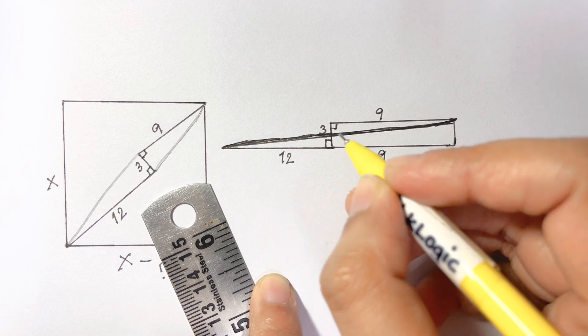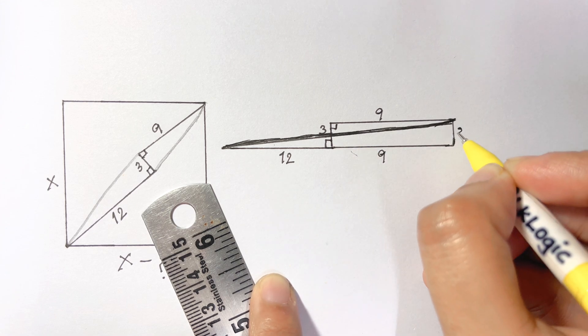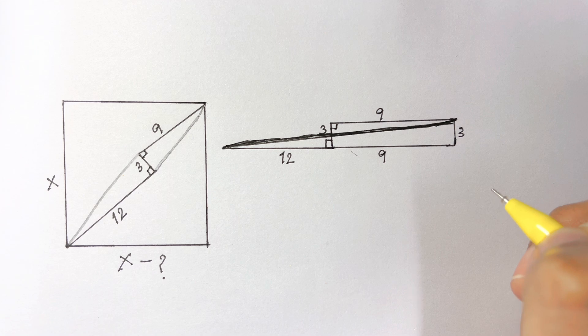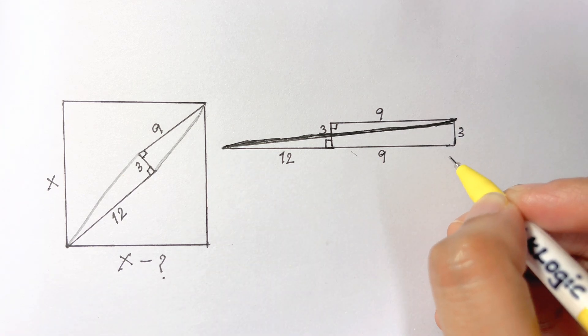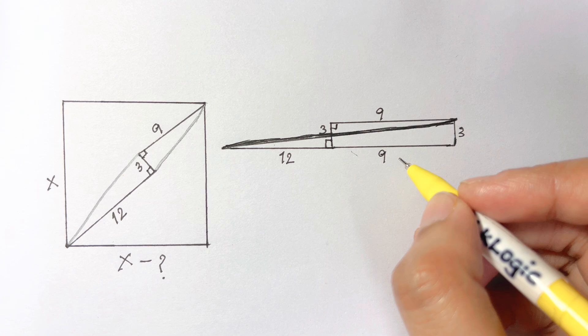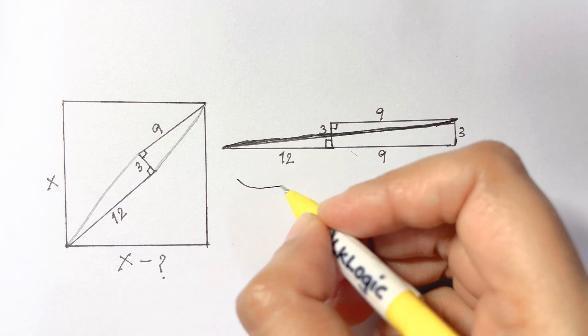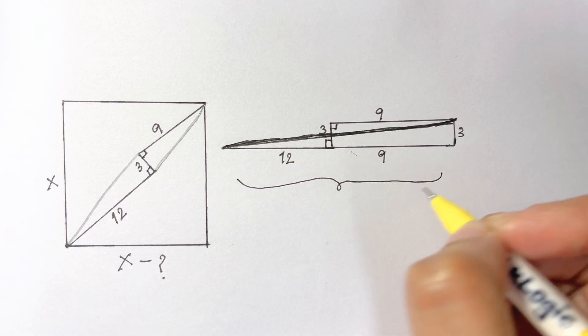So here the total length of this line segment—this is 12 and this is 9—this total will be 21. And this length is 3.